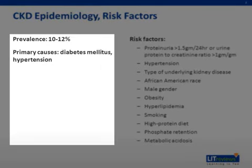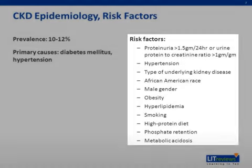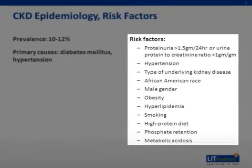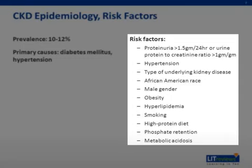CKD is estimated to affect about 10% to 12% of the population in the United States. The primary etiologies of CKD are diabetes and hypertension. Numerous clinical and laboratory markers serve as risk factors that impact the course of CKD. These include degree of proteinuria, hypertension, type of underlying kidney disease, African-American race, male gender, obesity, hyperlipidemia, smoking, high protein diet, phosphate retention, and metabolic acidosis.